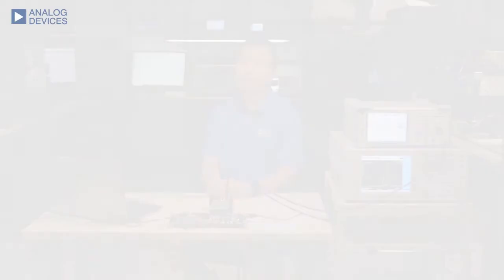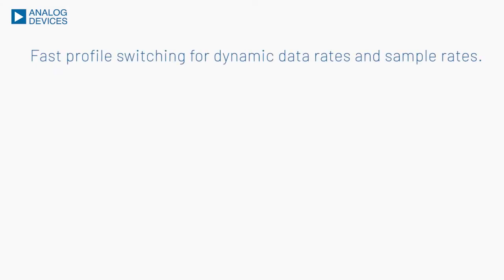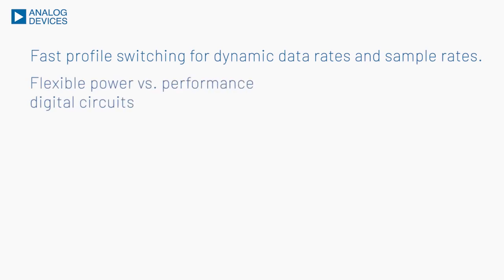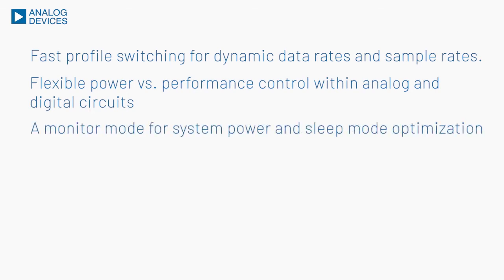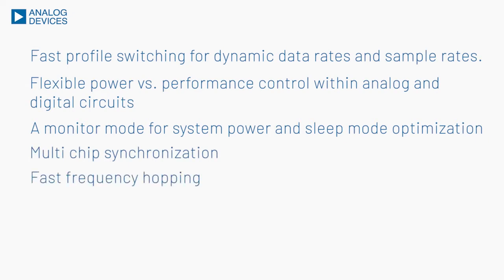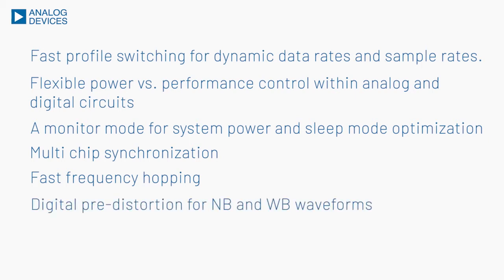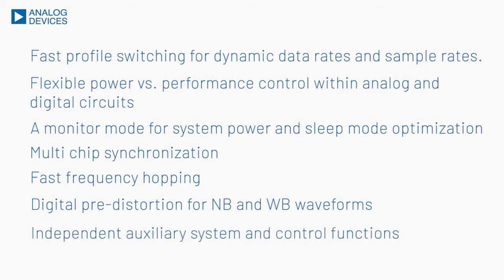The ADRV9002 offers a number of advanced system features such as fast profile switching for dynamic data rate and sampling rate, flexible power control versus performance control within both analog and digital circuits, a monitor mode to optimize system power consumption, multi-chip synchronization, fast frequency hopping, and digital predistortion for both narrowband and wideband waveforms. It also offers a number of useful auxiliary system and control functions to aid customer design.